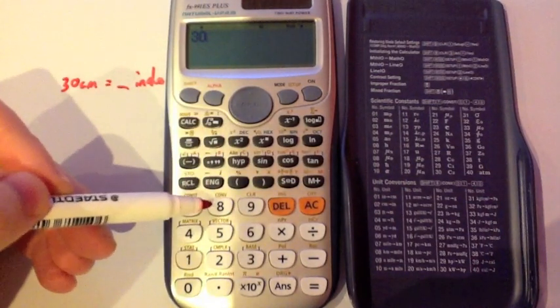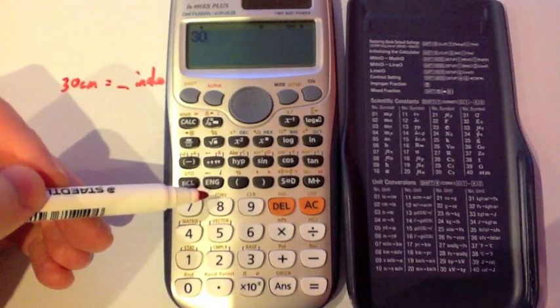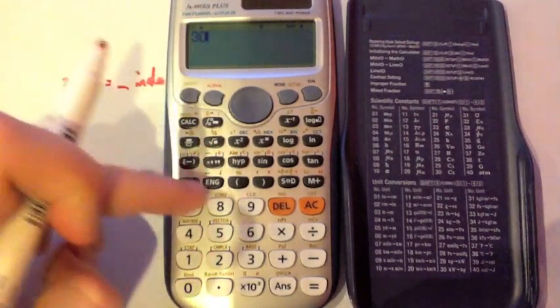And then above the 8 button you've got in yellow CONV, which stands for conversion. So we're going to press shift and then number 8.